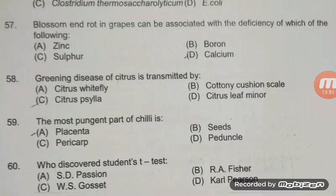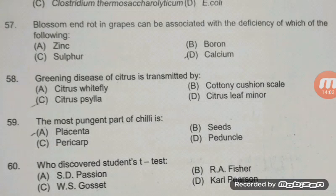Greening disease of citrus is transmitted by Diaphorina citri, caused by the bacteria Candidatus Liberibacter asiaticus — this is a very famous question nowadays. The most pungent part of chili — the right answer is A — placenta.